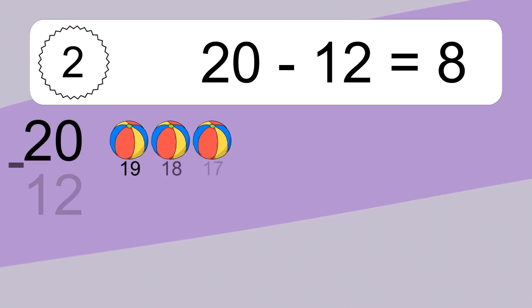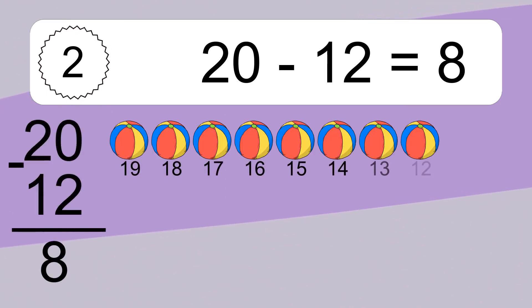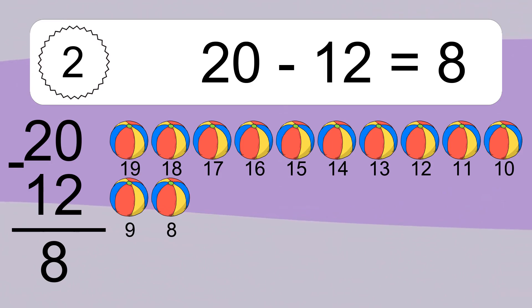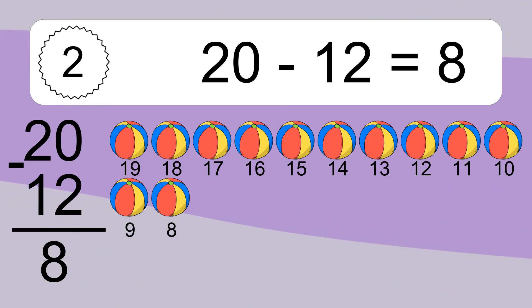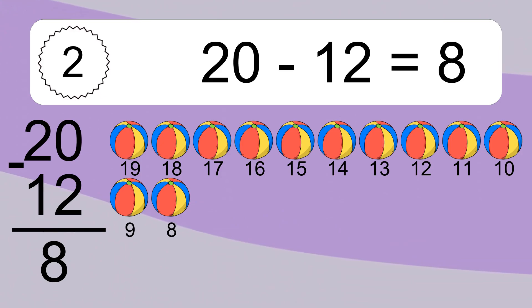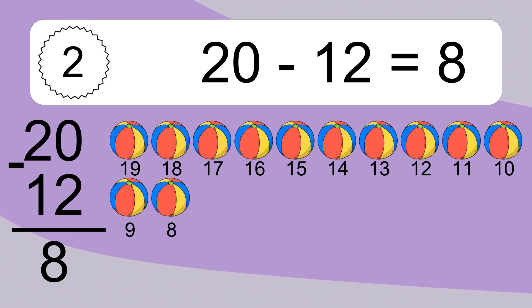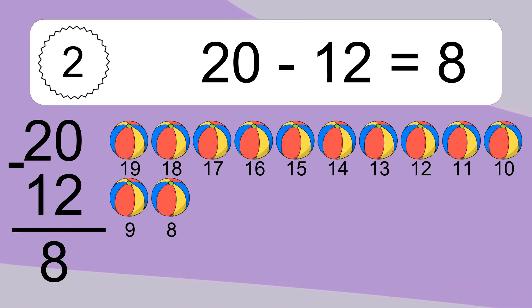20 minus 12 equals what? 20 minus 12 equals 8. Let's count it: 19, 18, 17, 16, 15, 14, 13, 12, 11, 10, 9, 8.